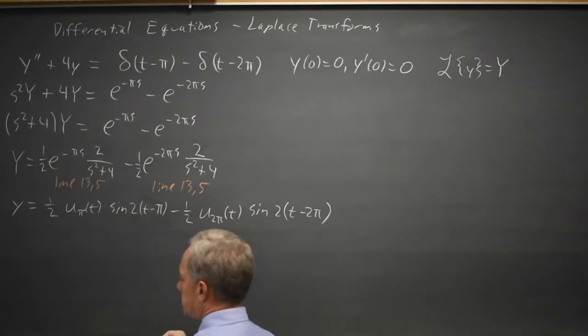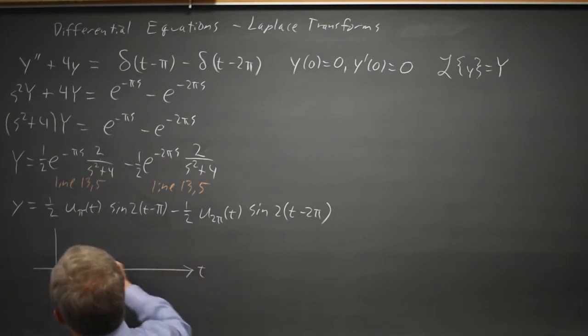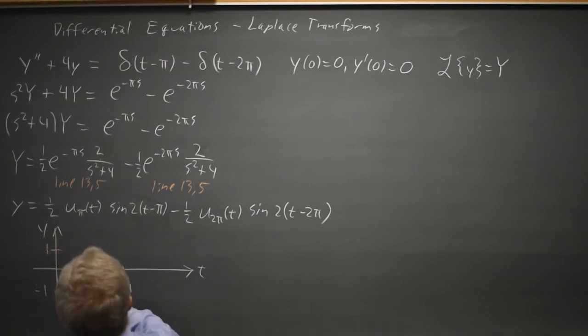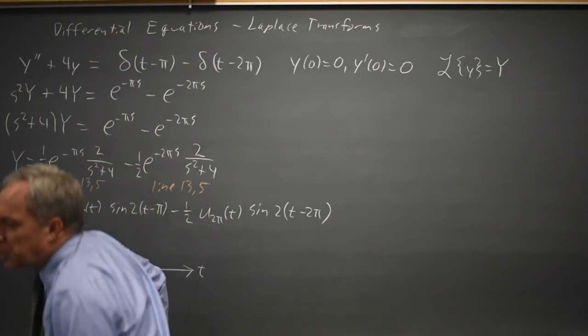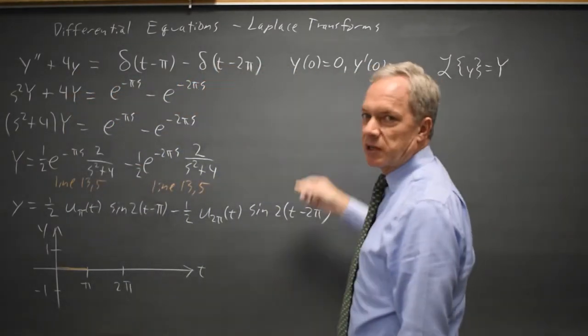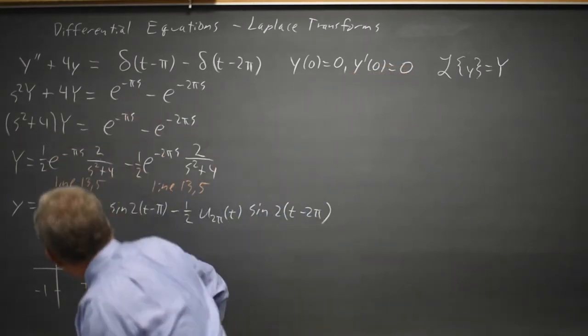And that would be my solution, and if I graph it: t, y, pi, 2 pi, and call this 1 and negative 1. My solution is 0 until time pi, which makes sense because I have an undamped harmonic oscillator that is initially in equilibrium at rest, so it will stay there until acted on by an outside force. Sounds like something Newton would say.